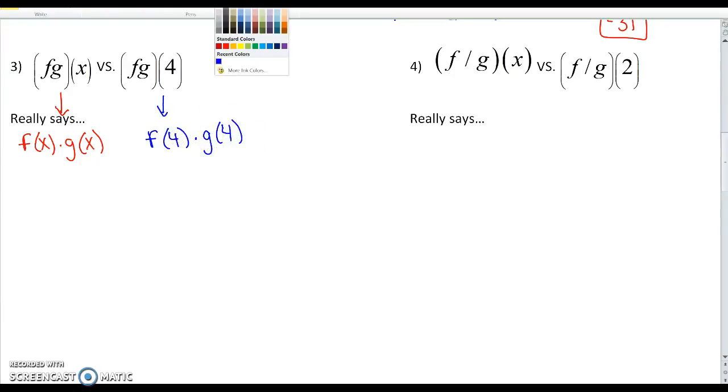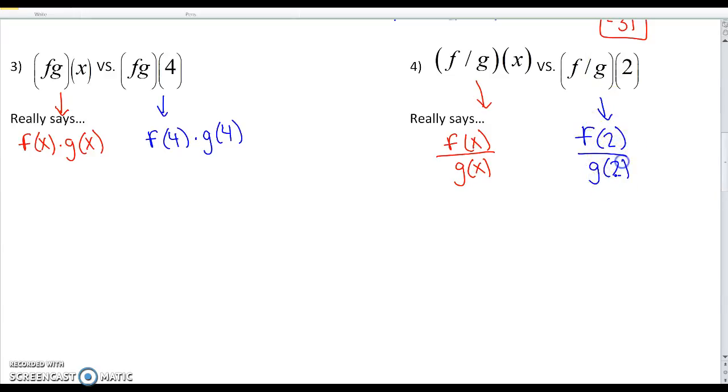And division is similar, but division. So this means f divided by g, where the input is x. So it would be f of x over g of x. Or, again, if you have an input, it's very similar, but you're going to input 2 instead of x. So I'm going to plug 2 in f, plug 2 in g. So it would be f of 2 divided by g of 2. So you can always translate these statements the way I'm doing it here.